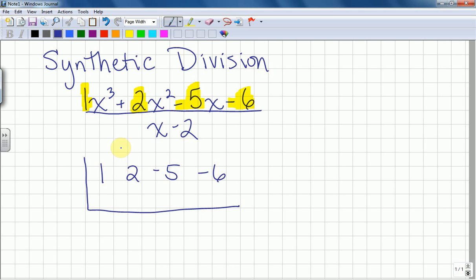So now I have to figure out, I took my coefficients from my numerator, and I listed those inside my problem, but I'm going to have to have something out here. Well, in order to figure that out, I'm going to look at my denominator or my divisor from my problem. So I had x minus 2. Well, I'm going to set that equal to 0. We're going to see what x equals.